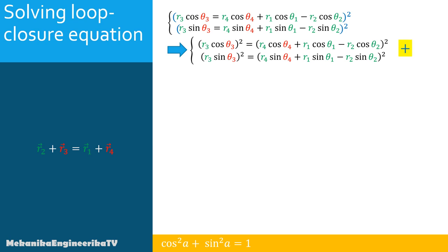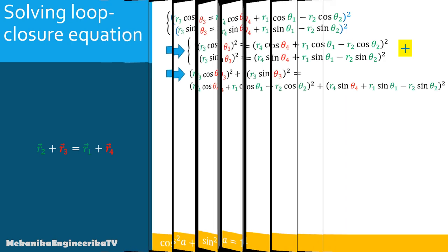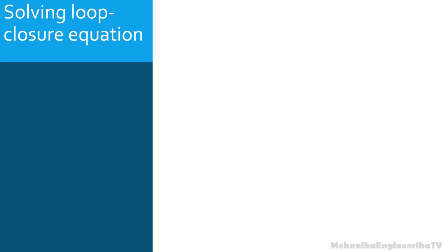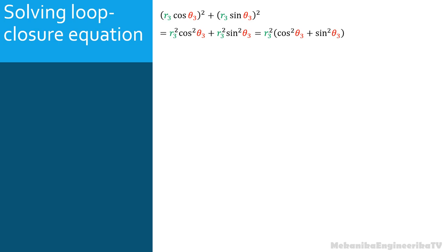We then sum the two squared equations by adding the left sides and the right sides. We need to simplify each side separately. The left side gives (R3·cos θ3)² + (R3·sin θ3)², which expands to R3²·cos²θ3 + R3²·sin²θ3 = R3²·(cos²θ3 + sin²θ3) = R3².